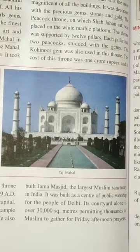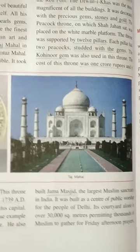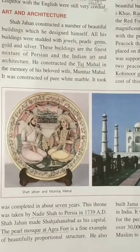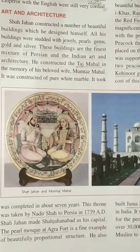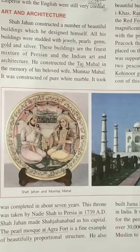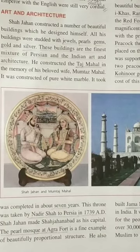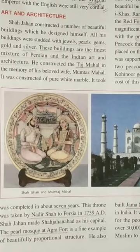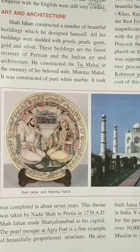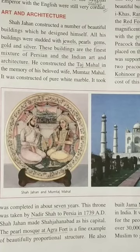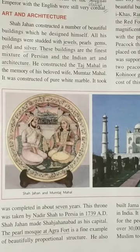So students, we have now studied the art and architecture built by Shah Jahan. We read about the Taj Mahal, the Red Fort, the Jama Masjid, and the Peacock Throne, which had the Kohinoor diamond embedded in it and was taken by Nadir Shah to Persia in 1739 AD. This completes our section on Art and Architecture, and we will discuss the next topic in the next video.